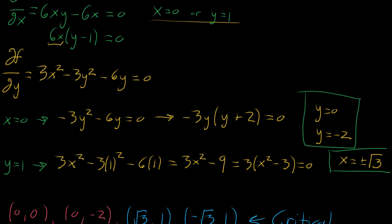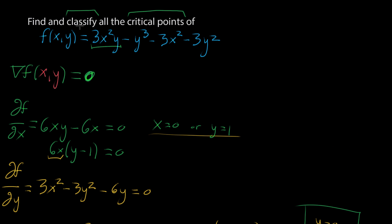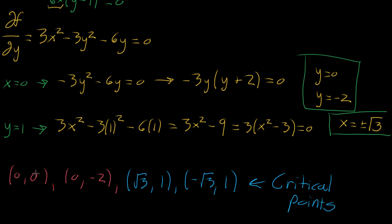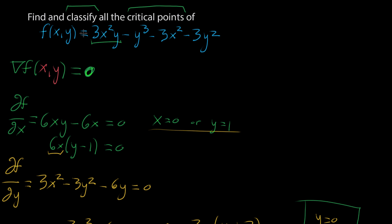In the last video, we were given a multivariable function and asked to find and classify all of its critical points. Critical points means finding where the gradient is equal to zero, and we found four different points: (0,0), (0,-2), (√3, 1), and (-√3, 1). The next step is to classify those, and that requires the second partial derivative test.